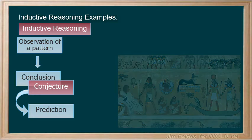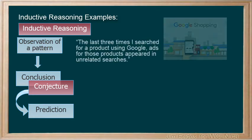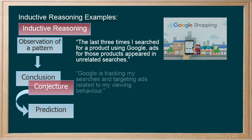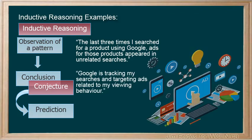Here is a more modern example. The last three times I searched for a product using Google, ads for those products appeared in unrelated searches. Our conjecture might be, Google is tracking my searches and targeting ads related to my viewing behavior. We are forming conjectures all the time, even if we don't realize it.